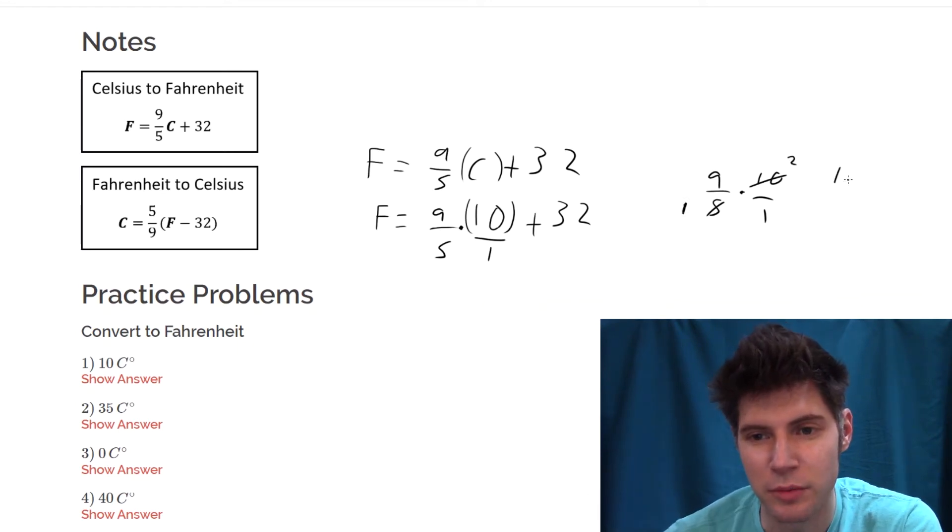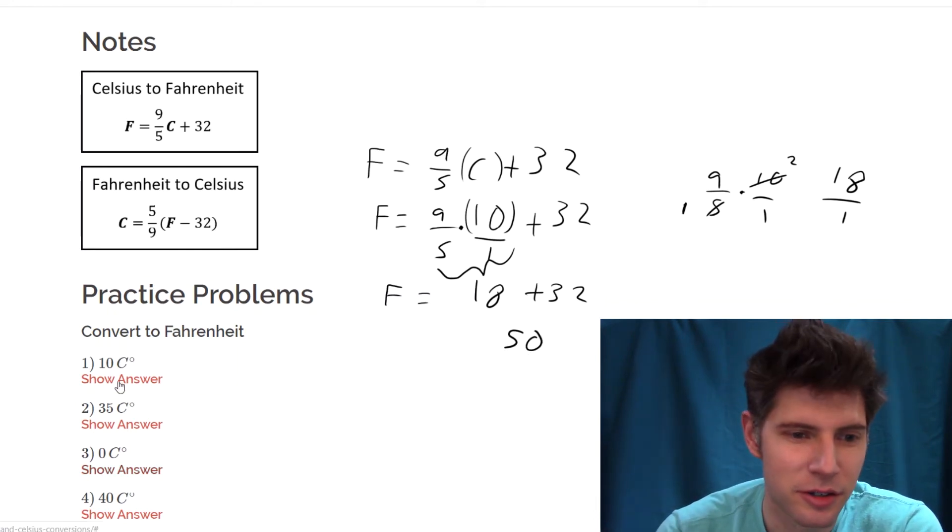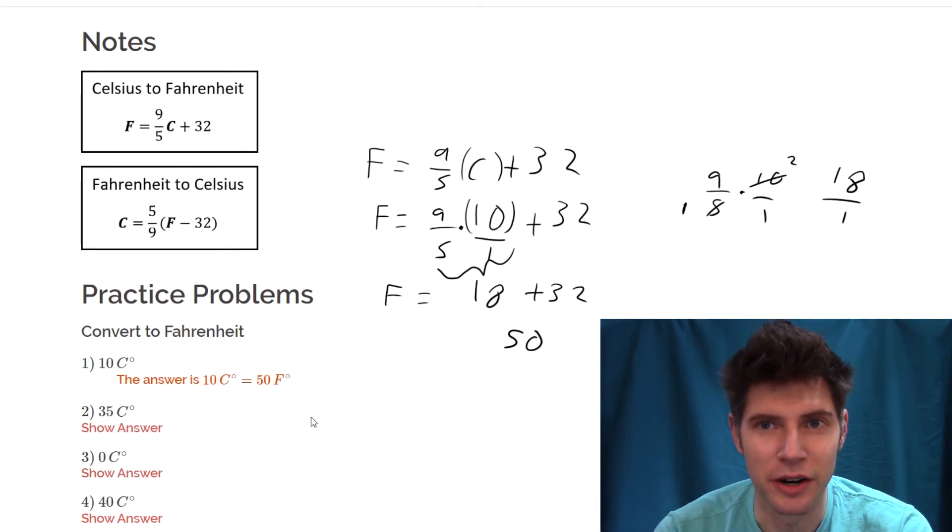So now we have nine times two, which is 18, and one times one, which is one. So F equals 18 plus 32, and that gives us 50. We can check the answer. The answer is 50 degrees Fahrenheit.